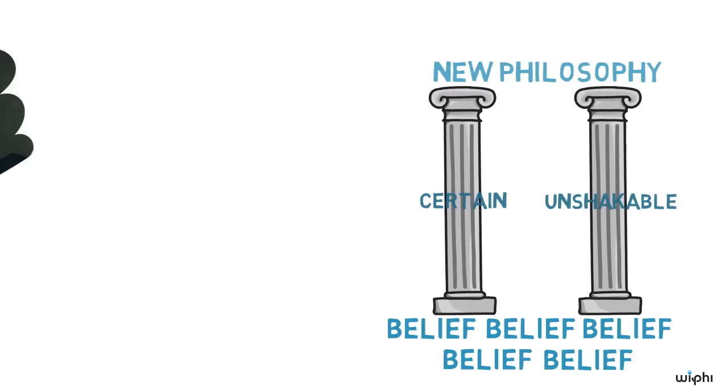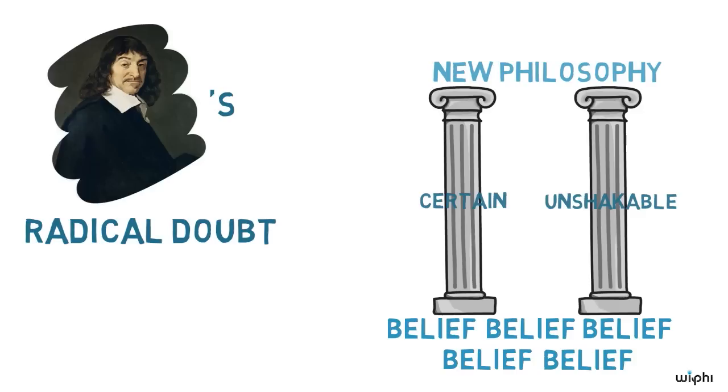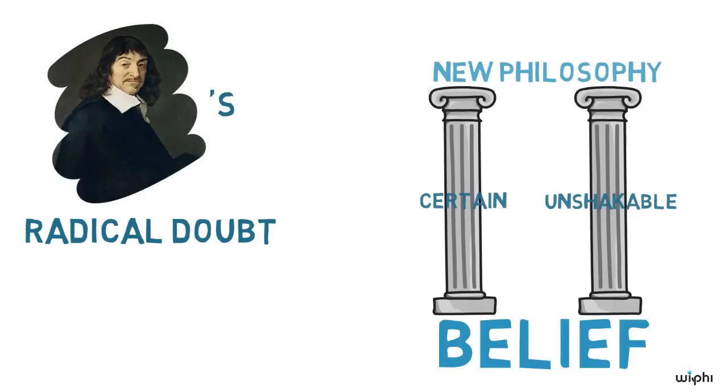The method that Descartes suggests has become known as Descartes' radical doubt. The main idea is to subject all our beliefs to radical doubt and then see which of them can withstand such doubt and hence be accepted as absolutely certain.